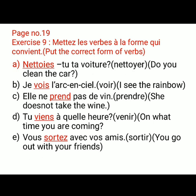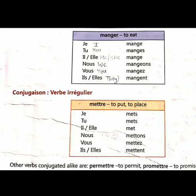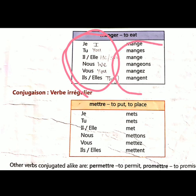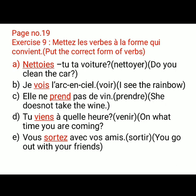This is your exercise number 9 on page number 19. As I told you in the previous class, we have to convert the verbs according to the subject — we have to change these words. So in exercise 9, we also have to do the same thing. Some verbs are given in brackets and you have to change the verb according to the subject.